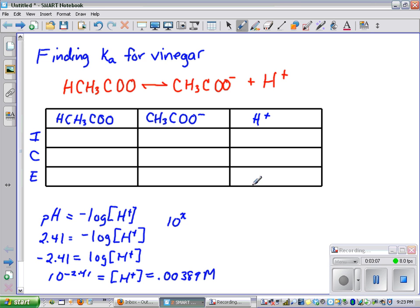This is our concentration of H+ at equilibrium. Now, in the beginning, before it dissociated, it was all acetic acid, which means this was 0. This was 0. If this was 0, we had to add 0.00389 to get 0.00389.